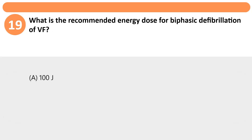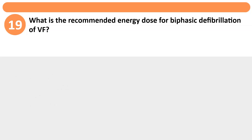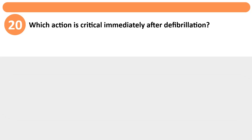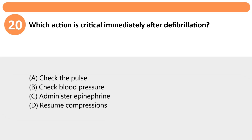What is the recommended energy dose for biphasic defibrillation of VF? A. 100J. B. 120-200J. C. 250J. D. 360J. Answer: B. The initial biphasic dose is 120-200J, depending on the device.